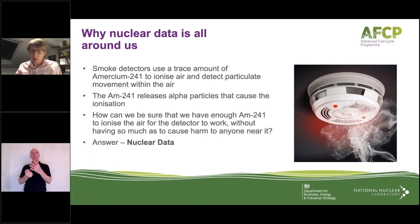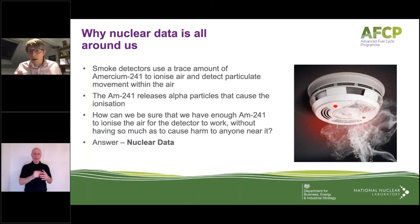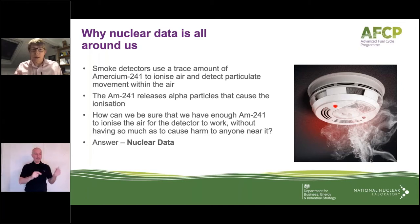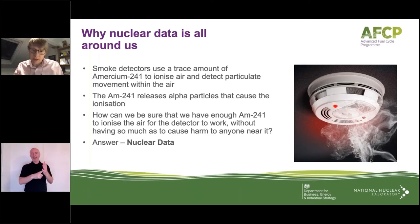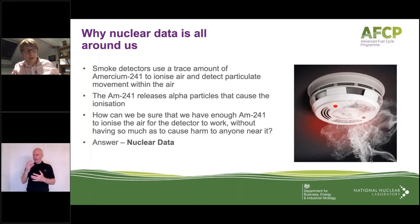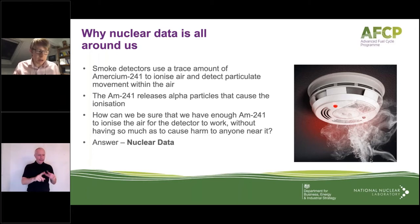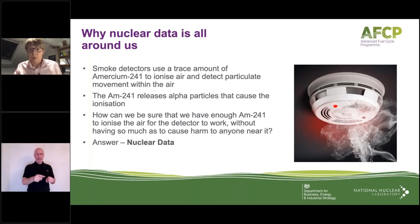The question is: how can we be sure we've got enough americium-241 to ionize the air for the detector to work, without having so much as to cause harm? That's where nuclear data comes in. Nuclear data provides all the fundamental physical parameters required for these calculations — such as how far an alpha particle travels in air and how many alpha particles are generated from some americium-241. Sheldon, incidentally, goes on to collect about 50 smoke detectors, prompting the FBI to investigate his garage. By my calculation, you'd need somewhere around 70 to 100 million smoke detectors to have enough radioactive material for an operational nuclear reactor.